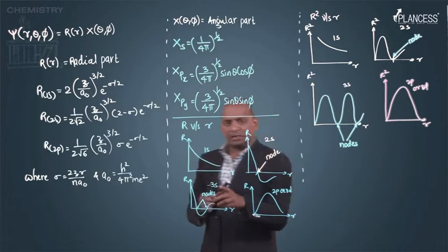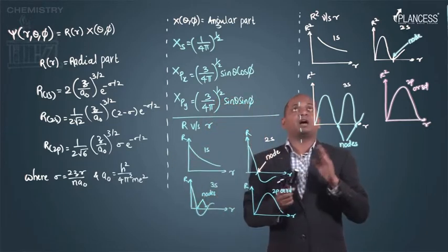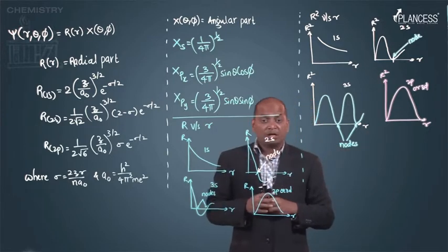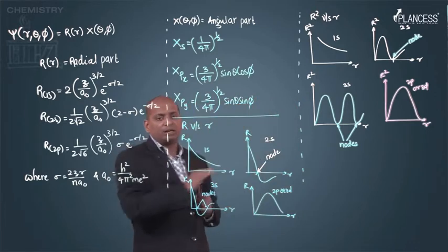If I consider 3s, it should cut at 2 points. If the graph is between r² and r, then it is very simple. This way they may ask your question in JEE mains based on graph.